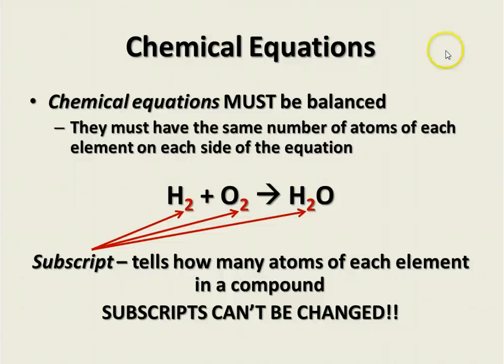We show the number of atoms in a molecule of a substance by using a subscript. A subscript is a little number at the lower right of the symbol for the element. And it tells us how many atoms of each element are in a compound. Here we have H2, which is hydrogen, and O2, which is oxygen.